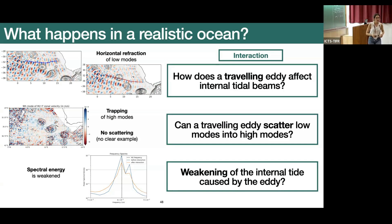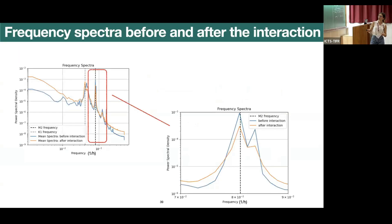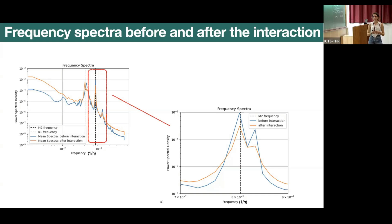Audience question: What is the energy level of eddy and wave in these cases? Scattering is very sensitive to the relative energy levels — if you drew an energy spectrum, how would it look? Response: These are frequency spectra with power spectral density, only looking at locations inside the eddy or before/after the interaction, not a full wavenumber spectrum. I haven't done a full energy spectrum — that would indeed help decide whether scattering occurs or not, since if the eddies are too weak there would be no scattering.